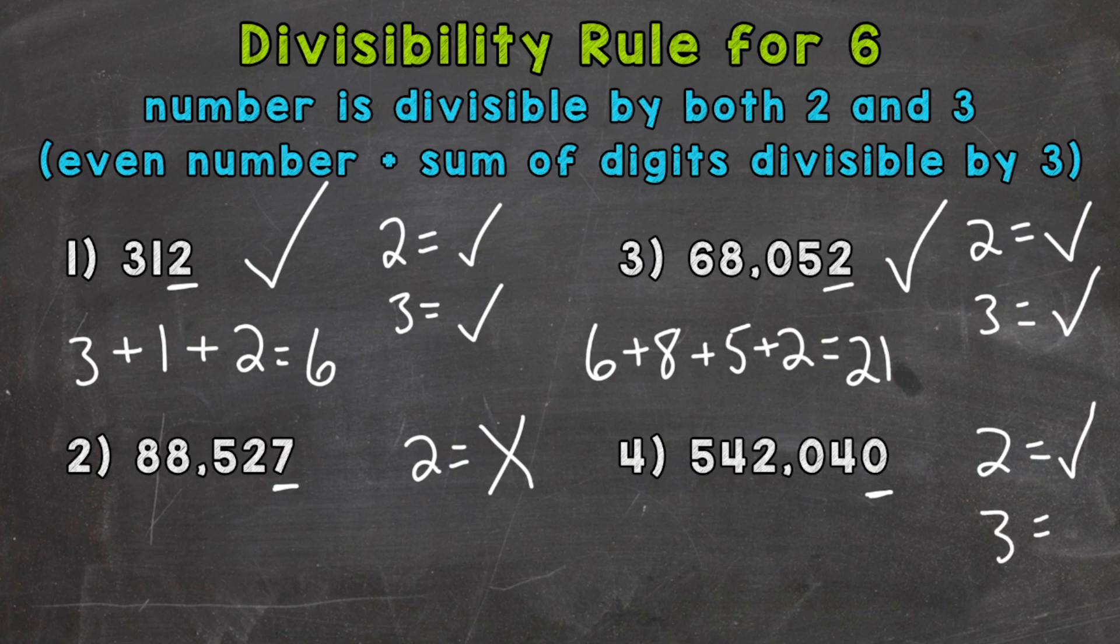Let's check 3. So we have 5 plus 4, plus 2, plus 4. So 5 plus 4 is 9, plus 2 is 11, plus 4 is 15. So we need to see if that sum, 15, is divisible by 3.